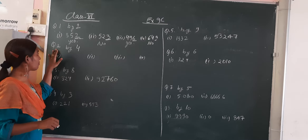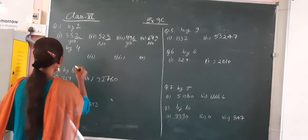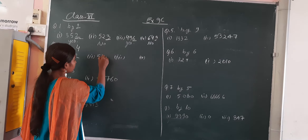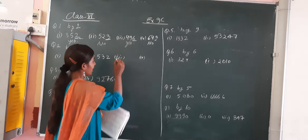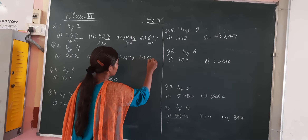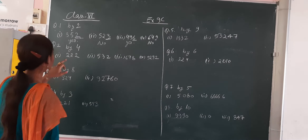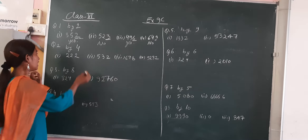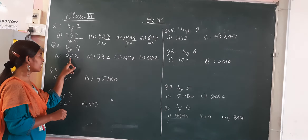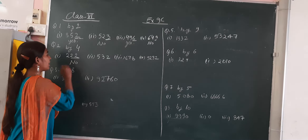Now come to question number 2. In question number 2, the first option is triple 2. Second option is 532. Third option is 678. And fourth option is 9232. We are checking the divisibility rule of 4. If the last 2 digits are divisible by 4, then the number is divisible by 4. Last 2 digits are 22. 22 is not in the 4 times table, so it is not divisible by 4.